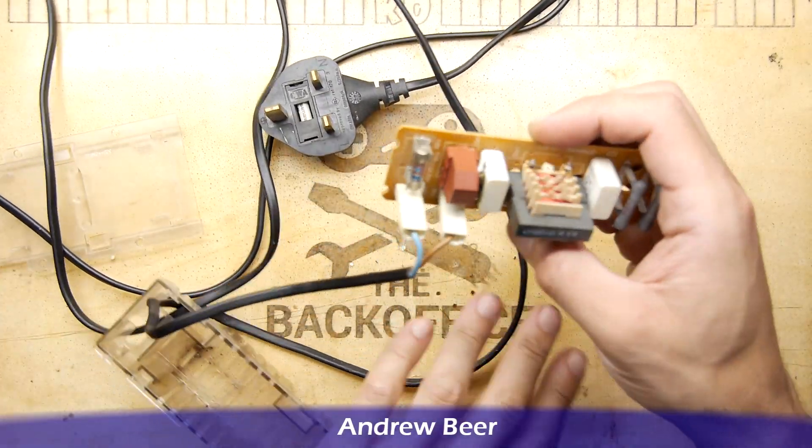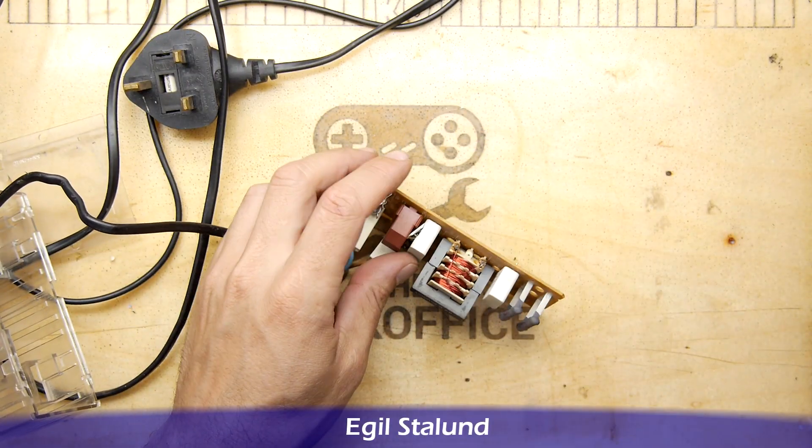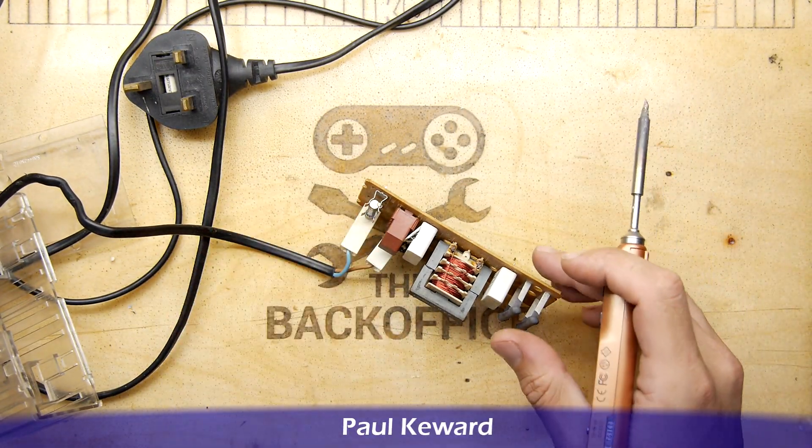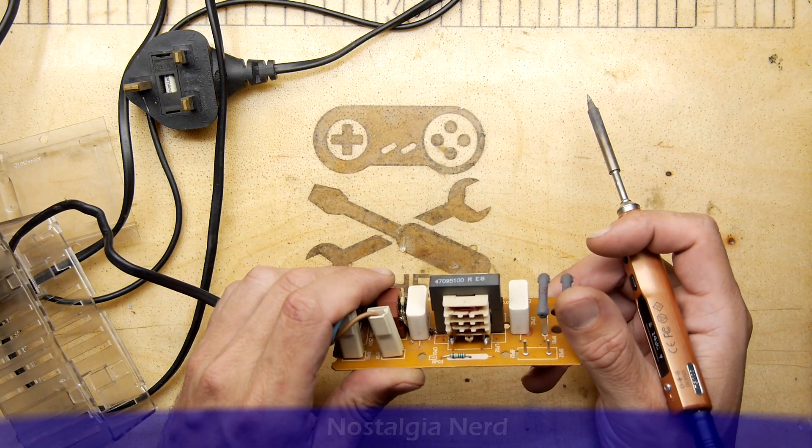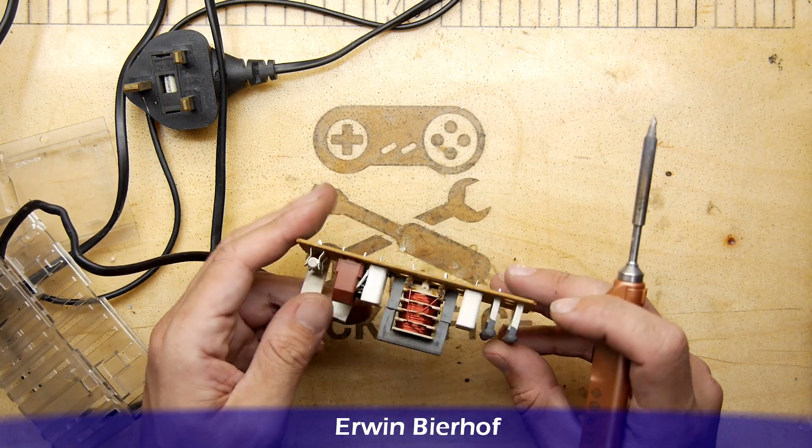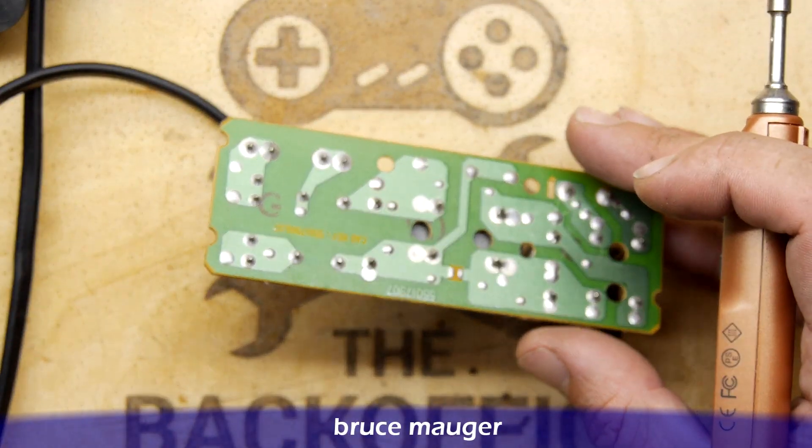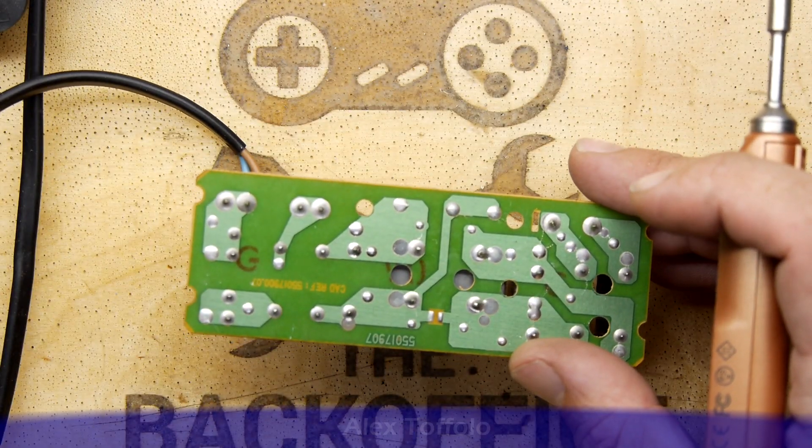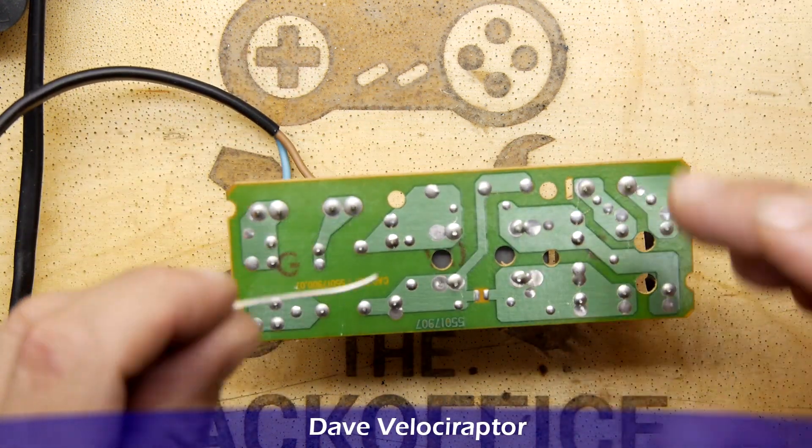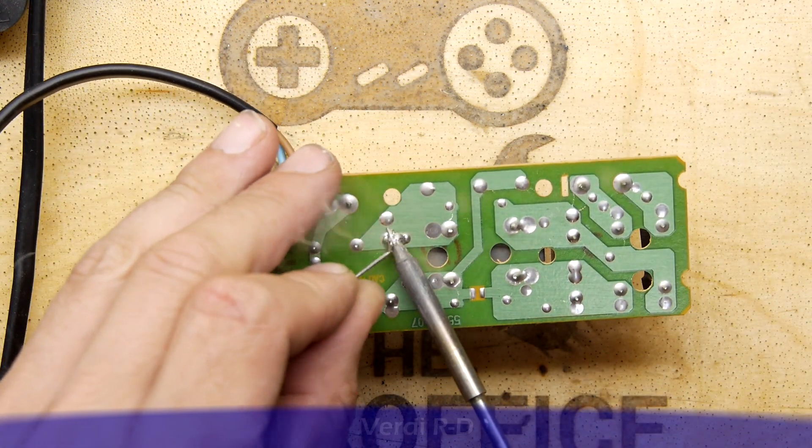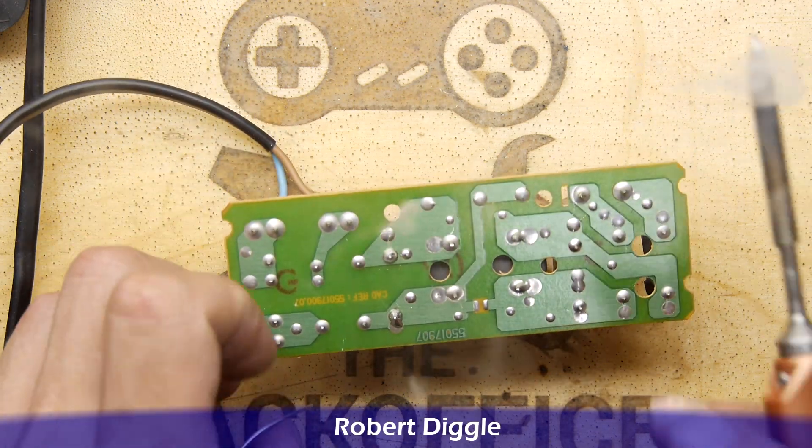If you know what this board does, please comment down below. I think all I need to do is replace the reefer, so we're going to have a go at extracting it. We need to see the values on it and check if any of the surrounding components are popped. I think if I'm lucky, I have some old power supplies knocking around.